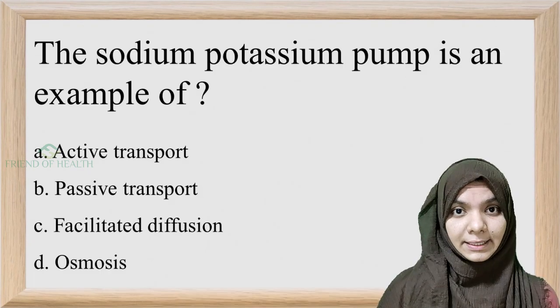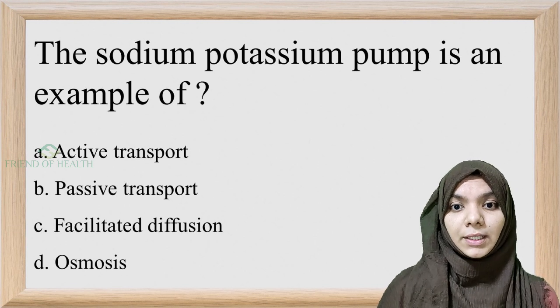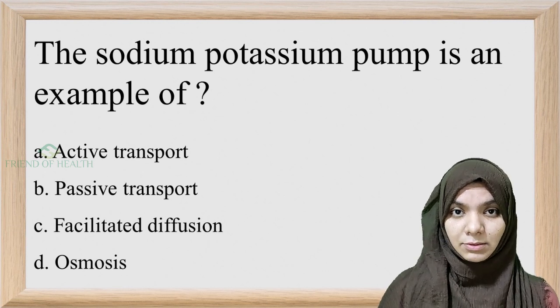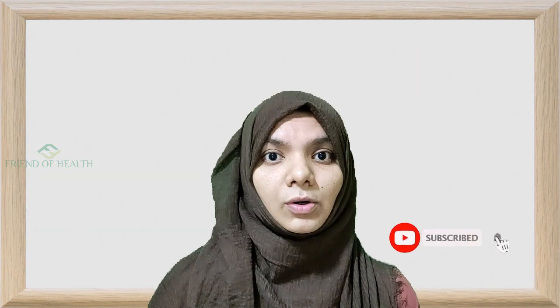The sodium-potassium pump is an example of: option A, active transport; B, passive transport; C, facilitated diffusion; and D, osmosis. From this topic we should know the basic things about active transport, passive transport, facilitated diffusion, and osmosis. Let us see those basics and then come to the answer.